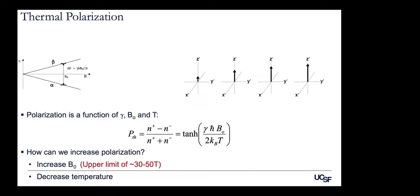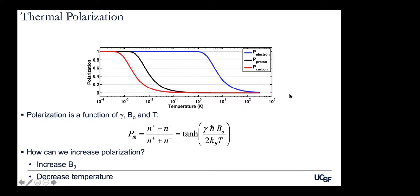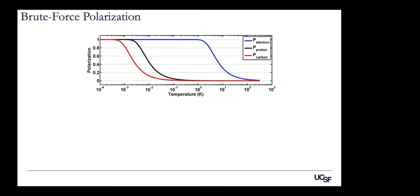You can also decrease temperature. Looking at a plot of polarization versus temperature for carbon, proton, and electron nuclei: to get to 20, 30, 40 percent polarization by lowering temperature alone is possible, but you need to reach vanishingly small temperatures. For carbon, you have to get down to the millikelvin range. Simply getting to that millikelvin range gives you 60, 70, 80 percent polarization and more than five orders of magnitude increase in signal-to-noise.